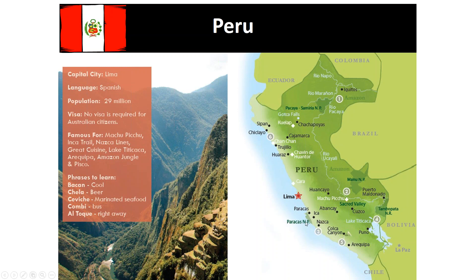The Paracas National Park, which includes the Ballestas Islands; Ica in the desert with its wineries and the Huacachina Oasis; and one of the great mysteries of South America — the Nazca lines — which I'll cover off on shortly.